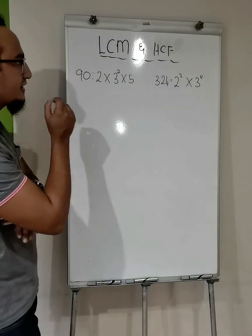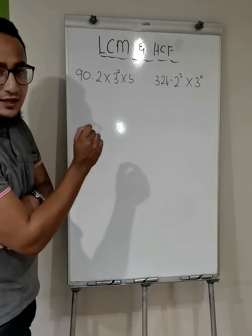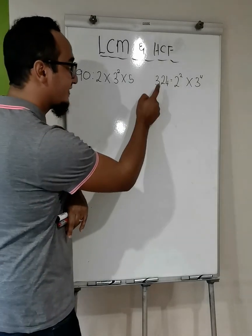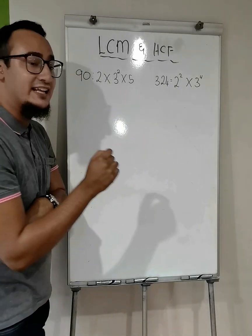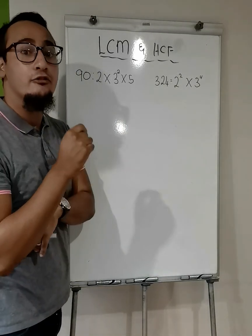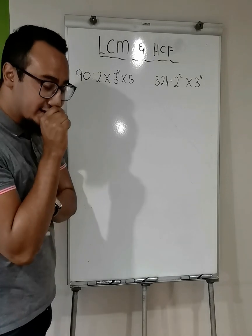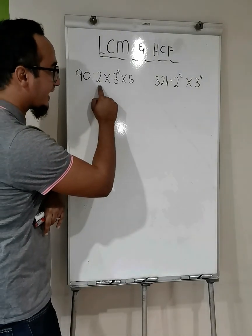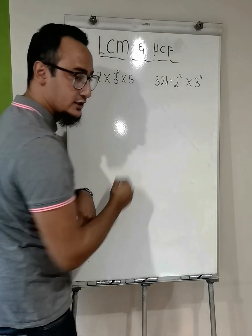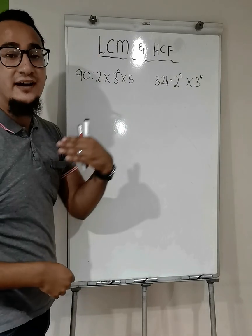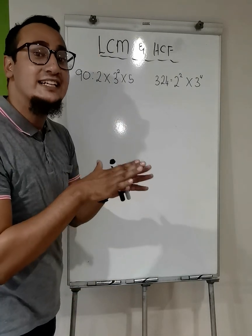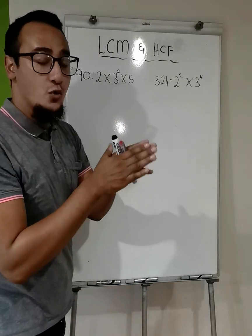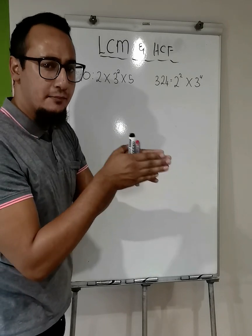Now, if you notice clearly, I want to find the LCM and the HCF of 90 and 324. I have the product of primes — prime factorization — already here. I skipped the tree method or the ladder method on purpose. Perhaps there will be a video where I show you how to do that with the use of a calculator.